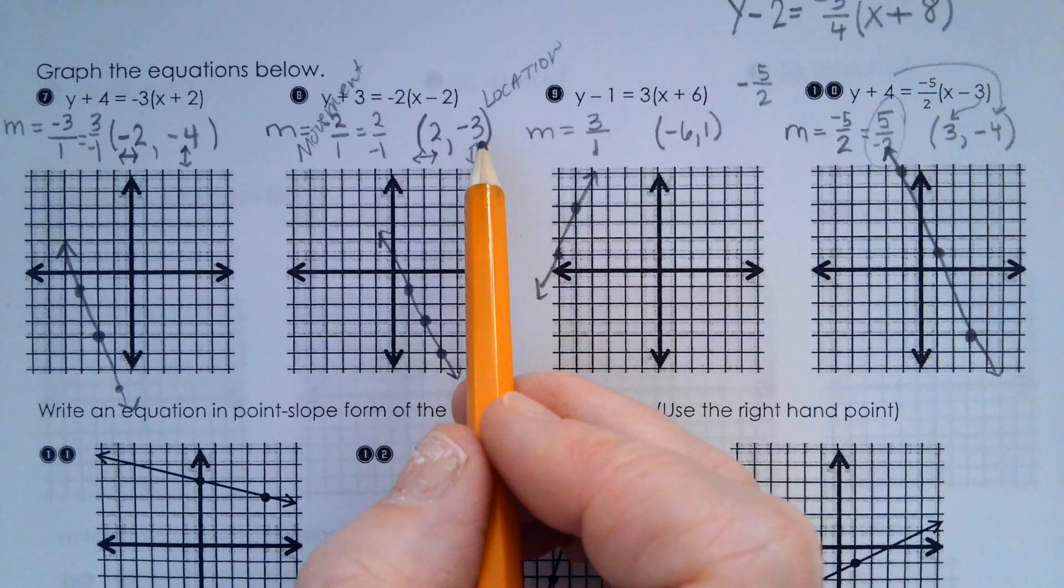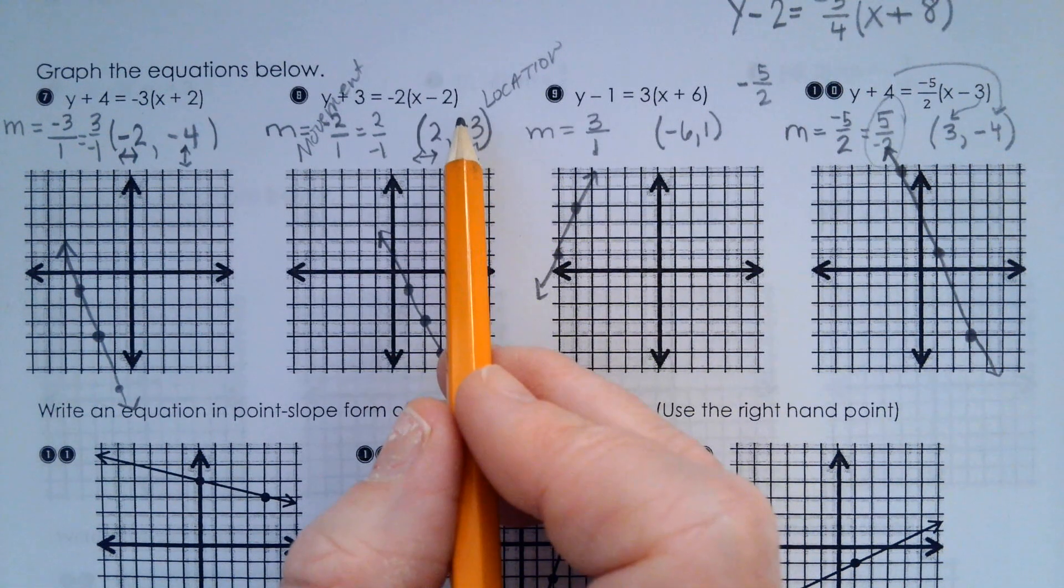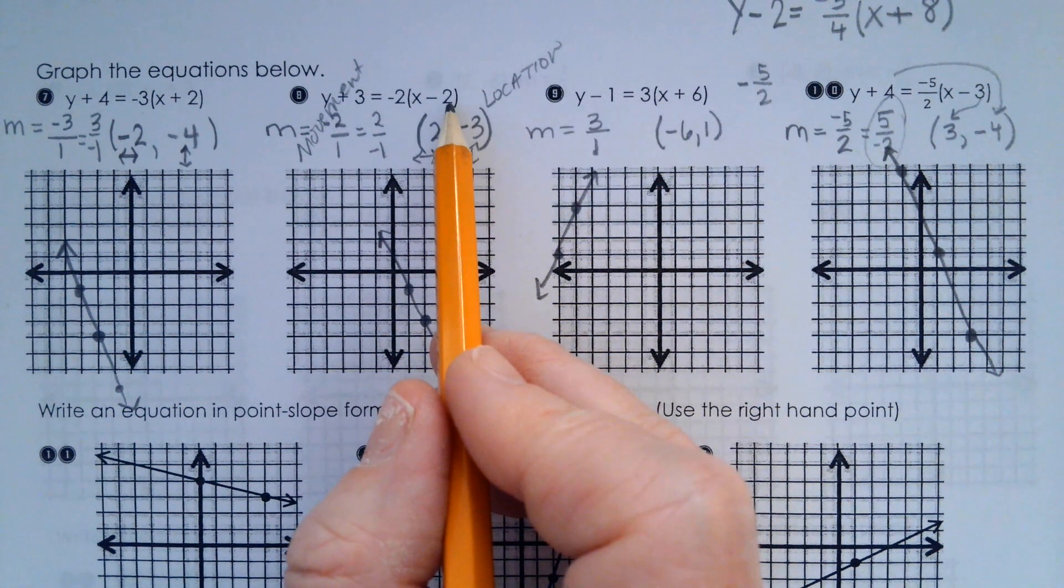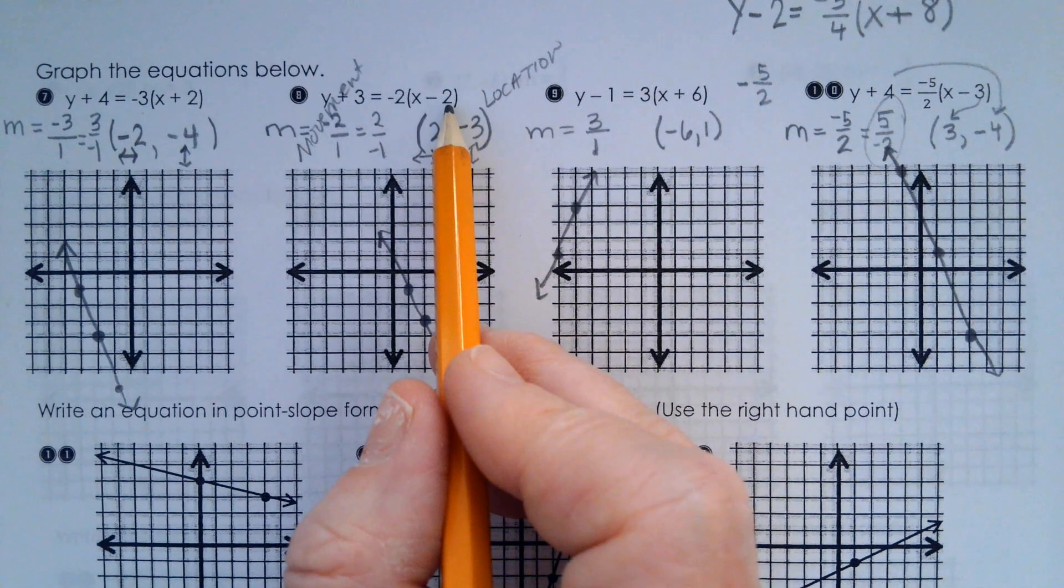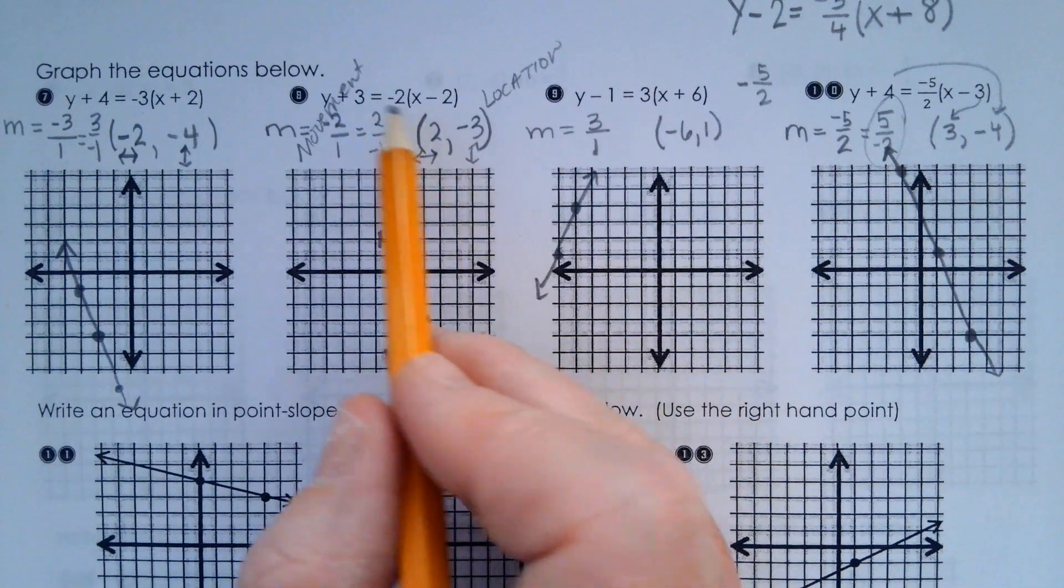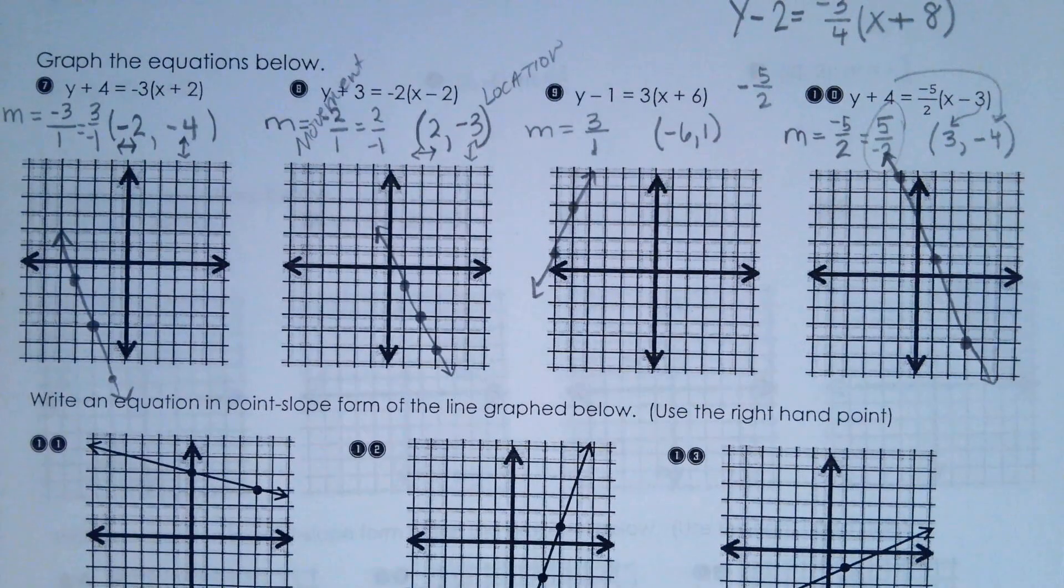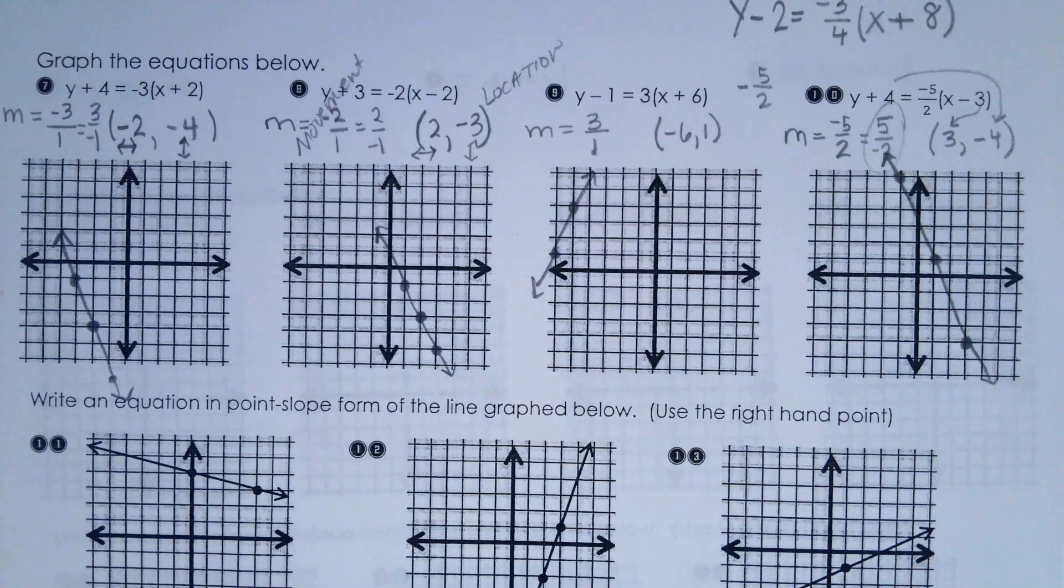Where do you find your x value? In the parentheses. Is it what you see or the opposite of what you see? It's the opposite of what you see. And the y value is from the y.